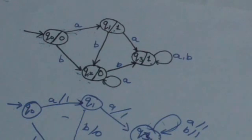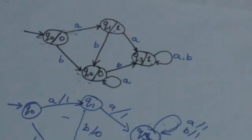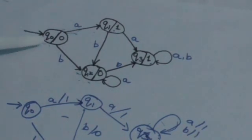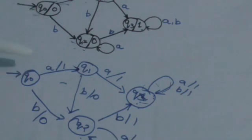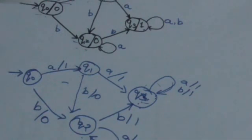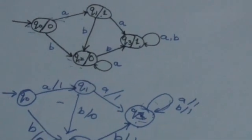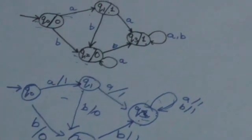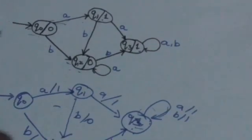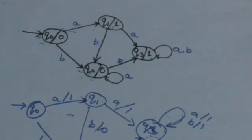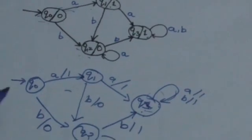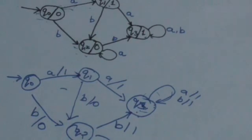In the Moore Machine, output is associated with the state, so when the machine starts it automatically gives an output associated with the present state. But in the Mealy Machine, outputs are associated with transitions, so output is given when the machine jumps from one state to another. Therefore, when we apply a string of input symbols to both machines, the Moore Machine will give one output symbol more than whatever symbols the Mealy Machine gives.